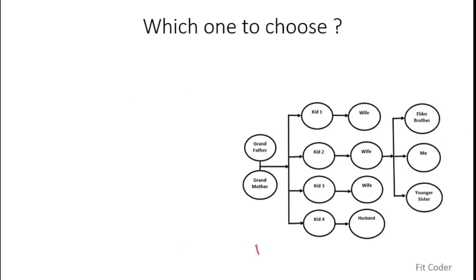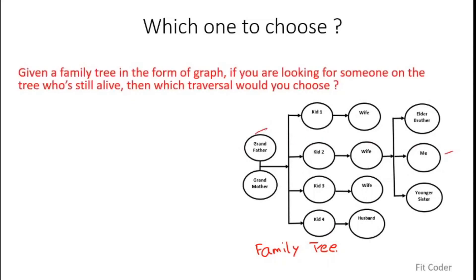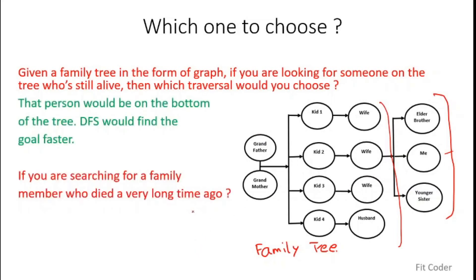Let's take an example: a family tree with grandfather, grandmother, and subsequent children — the youngest are deep down and the oldest are near the root. If we have to look for someone who is still alive, that person would be present deep down inside the tree, so it makes sense to go for DFS. If we are searching for a family member who died a very long time ago, that member will be near the root node, so BFS makes more sense since it traverses all child nodes at a particular distance from the start node at once.